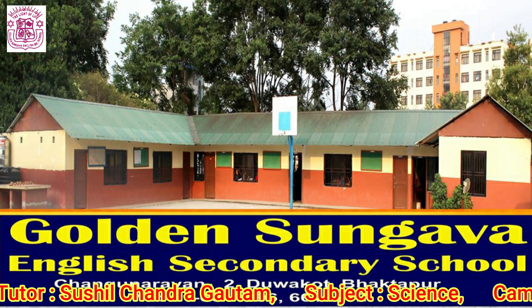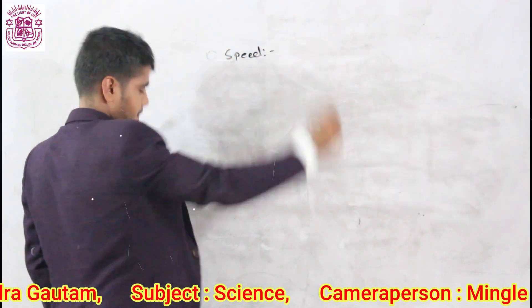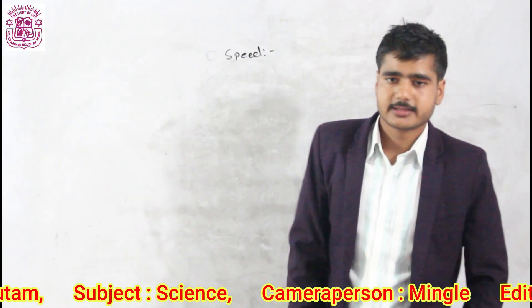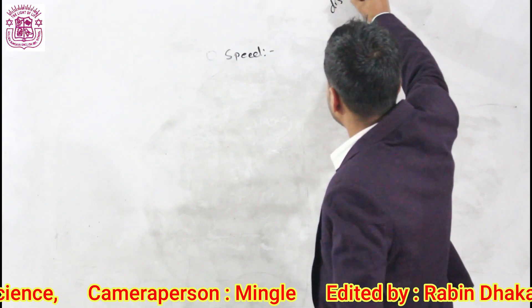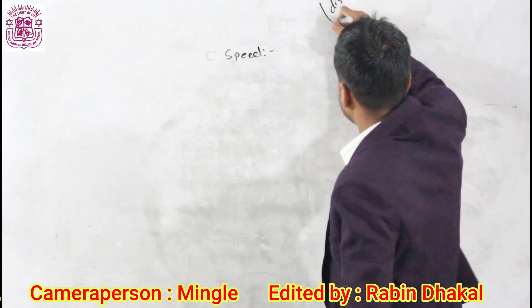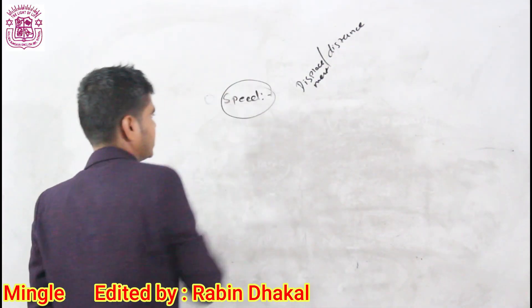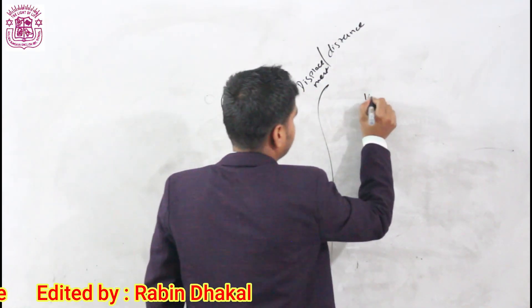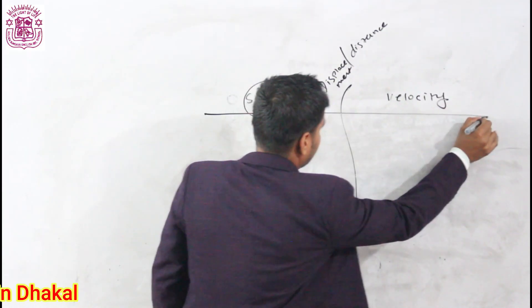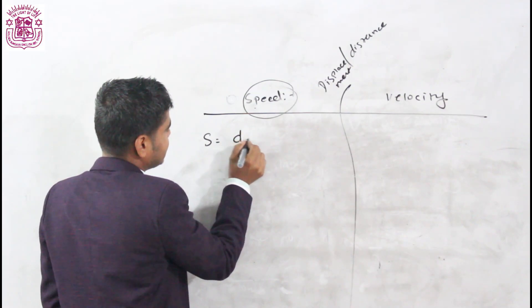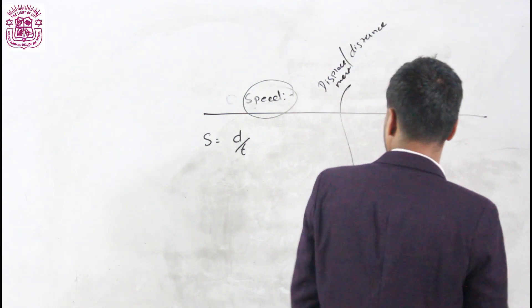Look at the board carefully. What is speed? Speed is defined as the distance travelled by a body per unit time.